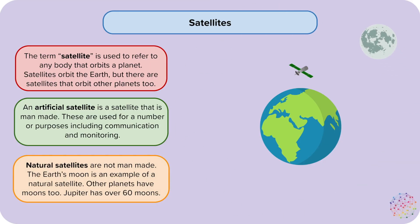Natural satellites are not man-made. The Earth's moon is an example of a natural satellite. Other planets have moons too. Jupiter has over 60 moons.